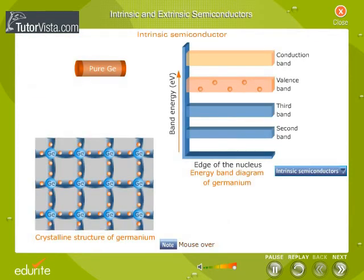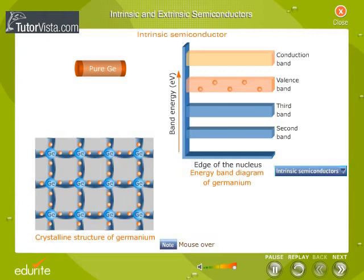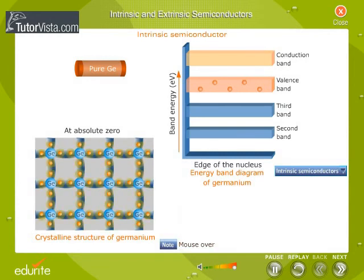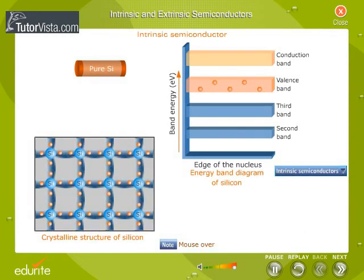The crystalline structure and energy band diagram of germanium are shown here. At absolute zero, all electrons of the semiconductor are tightly held. The inner electrons are bound, whereas the valence electrons are engaged in covalent bonding. At this temperature, covalent bonding is very strong and hence there are no free electrons.